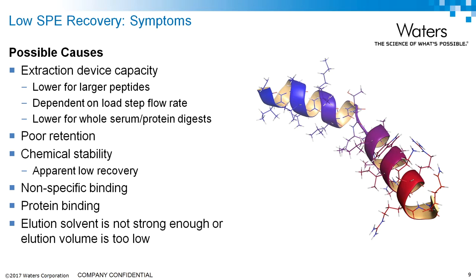One cause is that you don't have enough capacity. You may have a small device like a 10-mg cartridge with a large sample volume, in which case you might need to go to a higher capacity cartridge. It's important to note that the overall effective capacity is lower for large molecules compared to small molecules, because they cannot migrate fully into all of the chromatographic pores and are more dependent on the surface of the stationary phase for binding — and the larger the peptide, the more this appears to be true. This places a high dependence on the flow rate of the load step, where you want to maximize contact time.